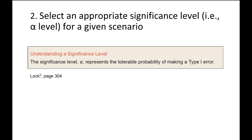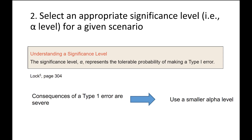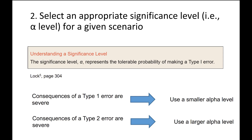Depending on the consequences of making each type of error, sometimes we use a smaller or larger alpha level. If the consequences of making a type 1 error are severe, we use a smaller alpha level. For example, in some medical research where making a type 1 error could mean giving people ineffective treatment, the alpha level is sometimes set at 0.01 or even 0.001. If the consequences of making a type 2 error are severe, we usually use a larger alpha level, such as 0.10.